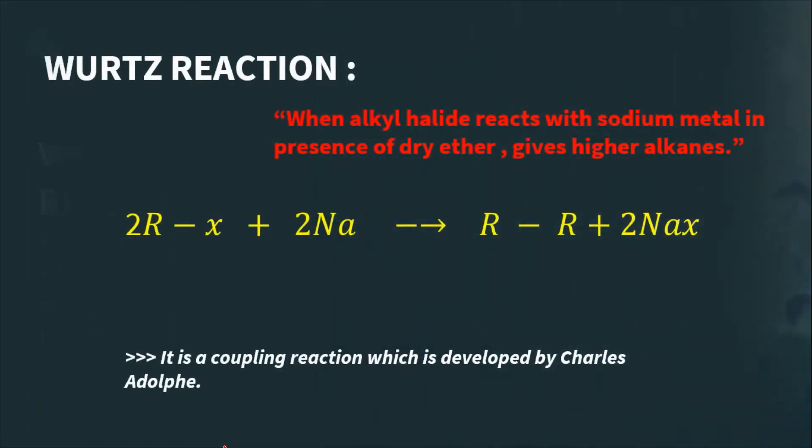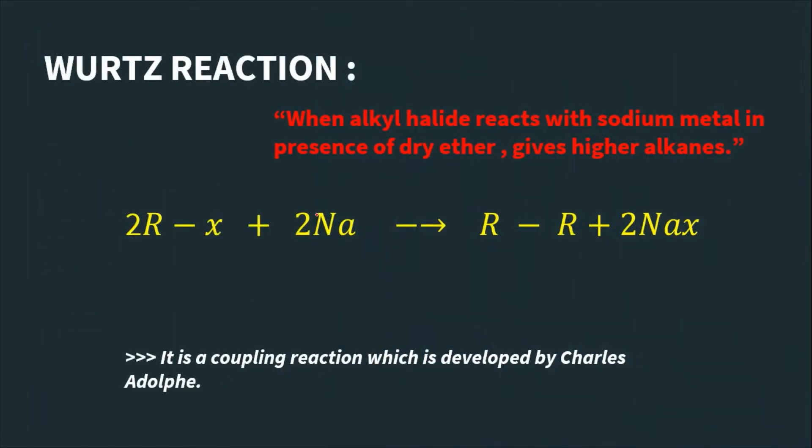Wurtz reaction: When alkyl halide reacts with sodium metal in presence of dry ether, it gives higher alkanes. This is alkyl halide where R is an alkyl group and X is halogen, which is fluorine, chlorine, bromine, and iodine.